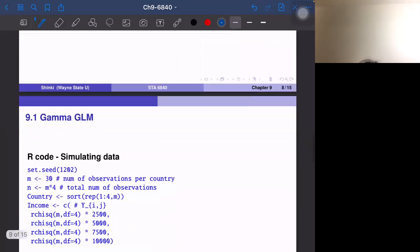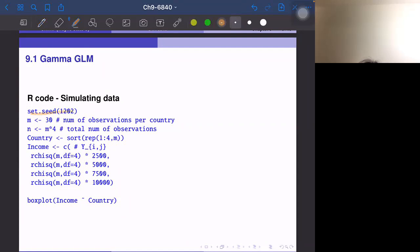So now we use the simulated data. We set seed first, then we have 30 observations each and in total 30 times four, so 120 observations. And for each country we generate random variables, that is the chi-square random variable with degrees of freedom four. Then we multiply 2,500 for i equals one and 5,000 for i equals two and so on.